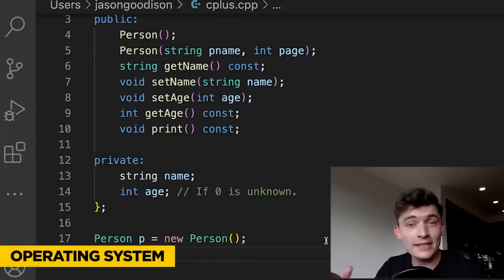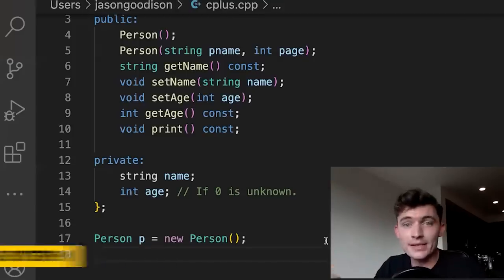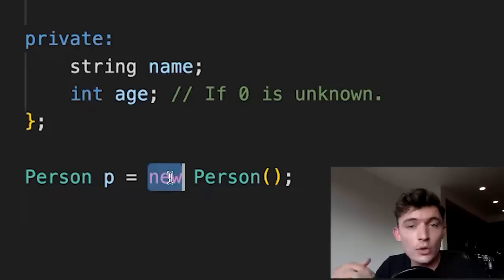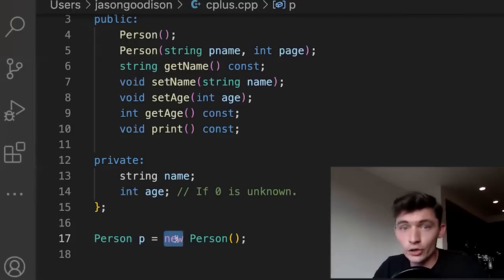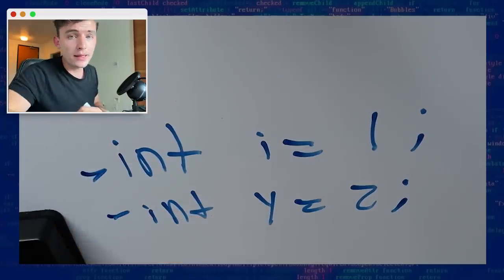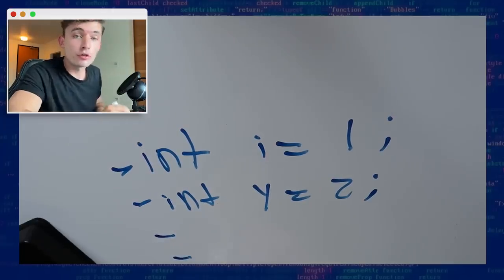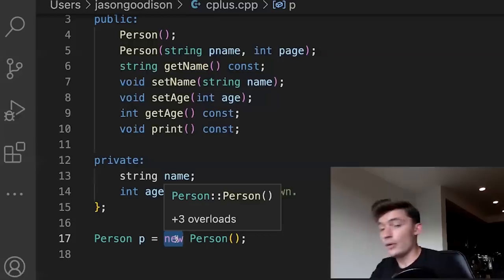Operating systems have these things called kernels. Kernel basically manages the system. Every time you said new or every time you opened a file, you were actually just asking the kernel to do it for you. Remember back when we told you code runs line by line? Well, that's still true. This sequential running is called a thread of execution. Now, what we didn't tell you is that you can have multiple threads of execution running at the same time.